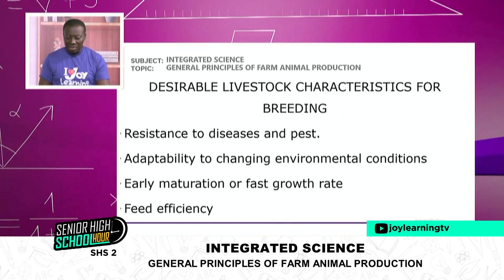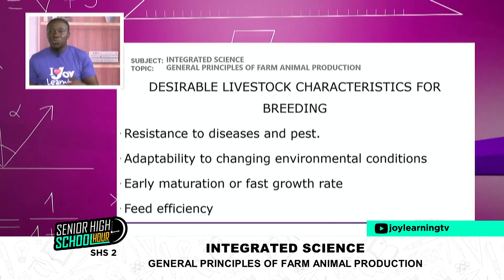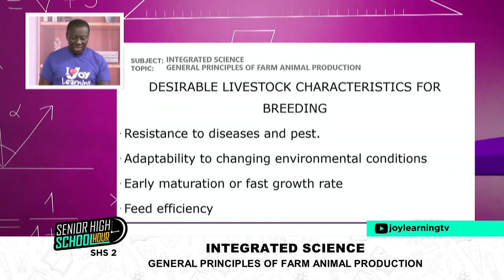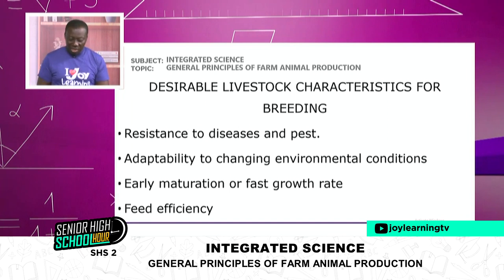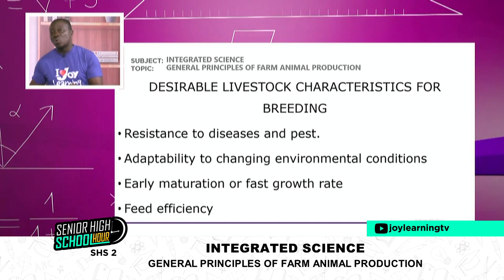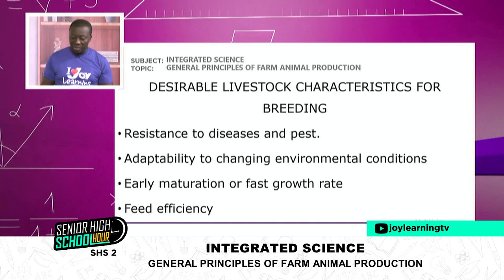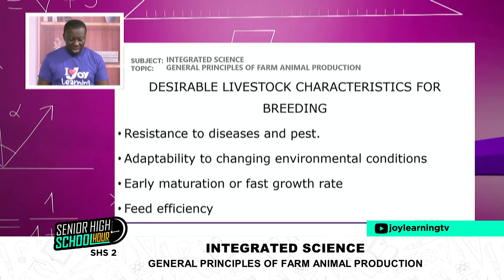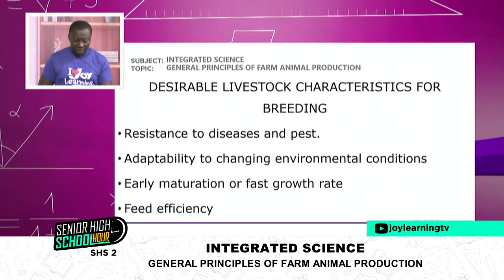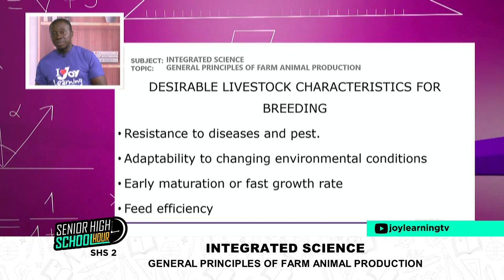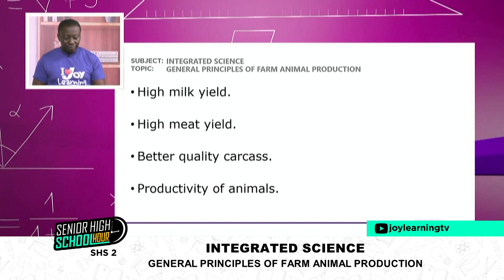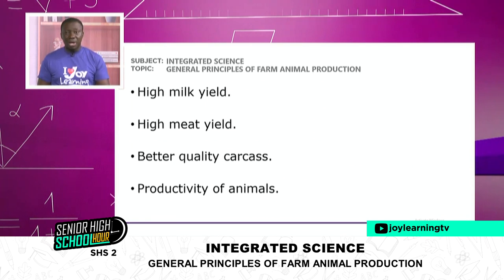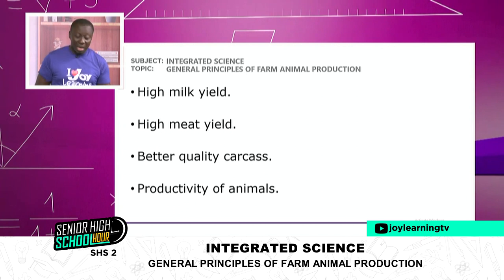The desirable livestock characteristics for breeding ruminants are: resistance to disease and pests — you want animals that will not easily fall sick; adaptability to changing environmental conditions — some animals cannot stand slight changes in temperature and they die; early maturation or fast growth rate — that is what you want so you can quickly get to the meat; feed efficiency — they are able to convert feed to meat and give you maximum output from the little feed they take; high milk yield; high meat yield; and better quality carcass and productivity of animals.